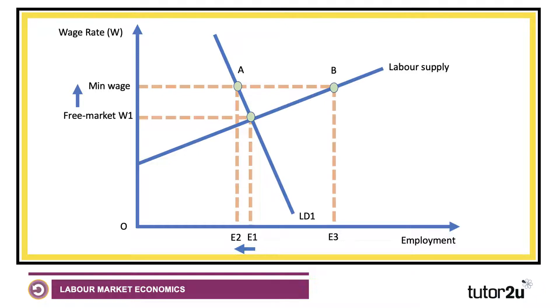You can make a case for saying that that would be beneficial. Those people in work — E2 — are getting a higher pay level. Yes, we've lost a bit of employment, but there's been an increase in total earnings to labour.